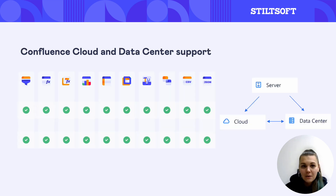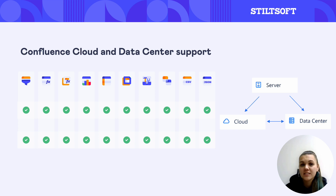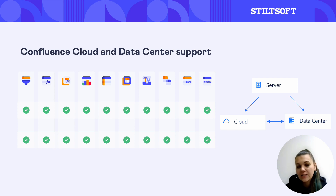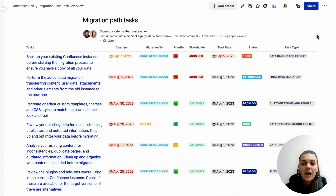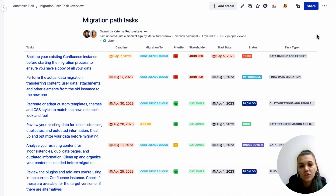All the examples I'll show you today are applicable both to cloud and data center versions of the Table Filter and Charts for Confluence app. Also, the app can be easily migrated without any additional actions. Now, Page Properties Report is our source table. You probably know it is widely used for structured data storage, dynamic summaries, and efficient project management.